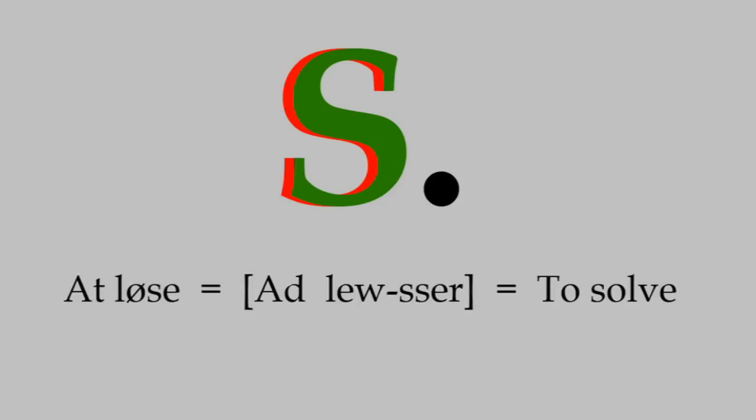Next is S. The Danish S is always pronounced like the English double S. It's ssss, always, even when it's between two vowels. As an example, at løse, which means to solve.